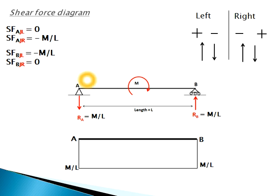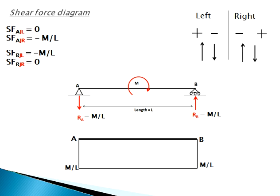Shear force at A (left) = 0. At A (right), only Rb acts upward — but on the right side, upward is negative, so shear force = −M/L. At B (left), only Ra acts downward — left side downward is negative, so shear force = −M/L. At B (right) = 0. The shear force diagram is thus a constant −M/L between A and B.